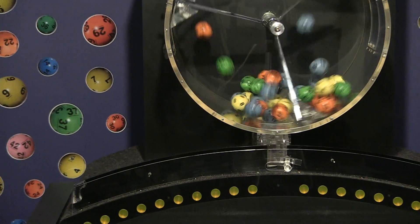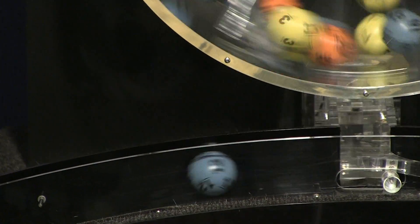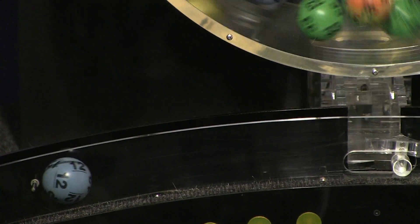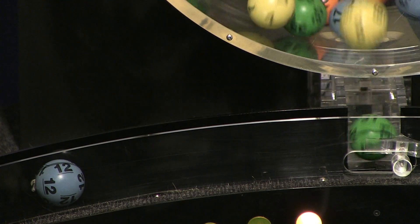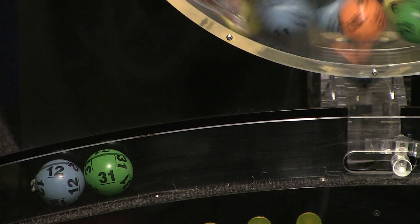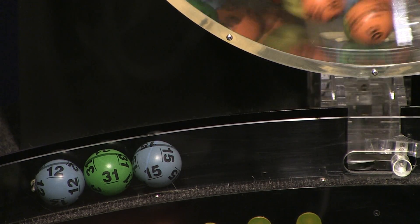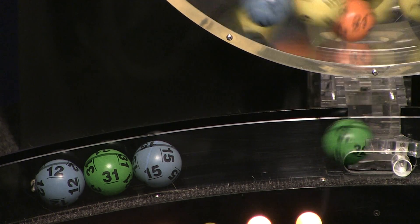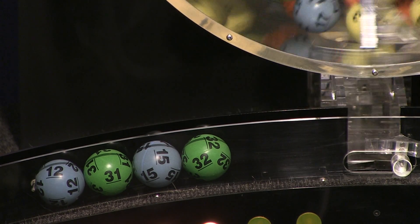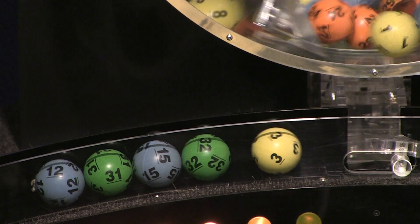jackpot. Now let's see how you did in tonight's Mass Cash drawing. First number up is number 12 and following that we have number 31, and here comes number 15, up next is 32 and the final ball in this sequence